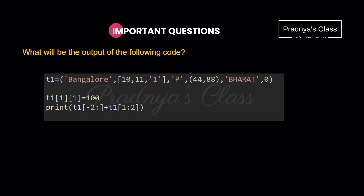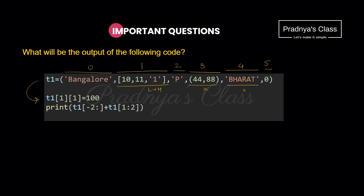Let's discuss one more question based on nested tuple. First, let's write the indices: index 0 is the first element, index 1 is the whole list, index 2 is the next element, index 3 is the nested tuple, index 4 is the string, and index 5 is the last element. In the next statement, we try to change an element — this is only possible if the nested element is a mutable type.